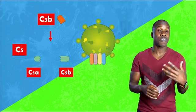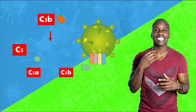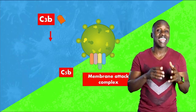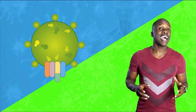And then for the final step in the process, C5B will join with C6, C7, C8, and C9 to form what's called the membrane attack complex. This complex will then attach to the membrane of the pathogen and make a hole in it.